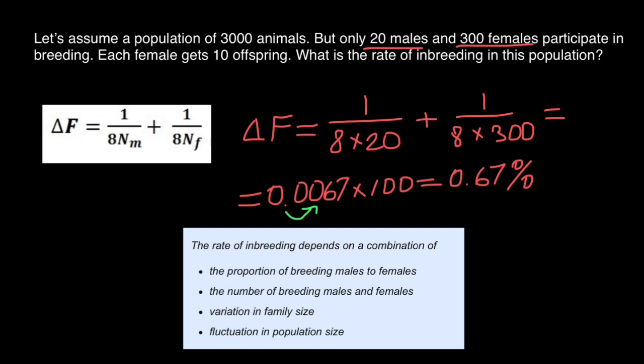And next, variation in family size. This is something I want to explain to you now. So far we have assumed that the family size, so the number of offspring in males and females, is equal for all families. In real life, it is not the case, because the rate of inbreeding is most influenced by the largest family, because they will have the largest proportion of the offspring in the next generation or generations. We also have assumed that the population size remains constant across generations.